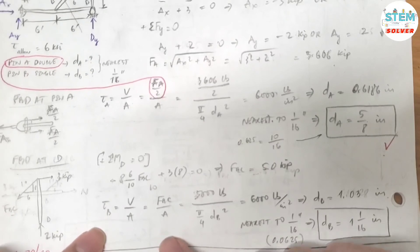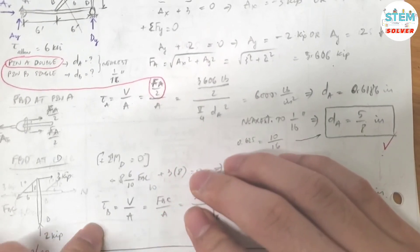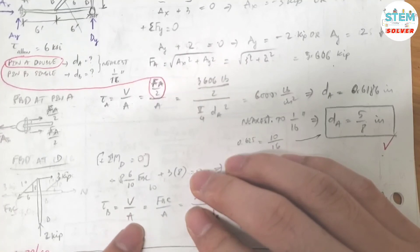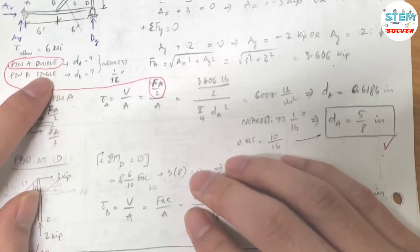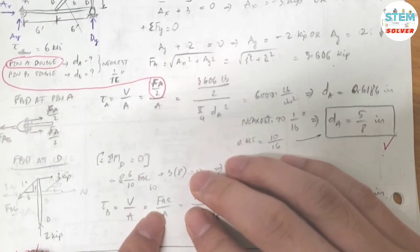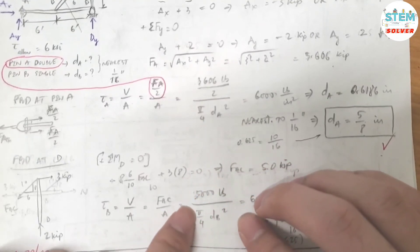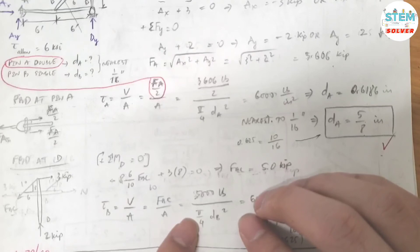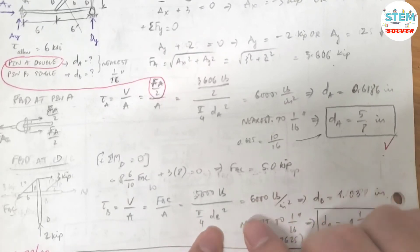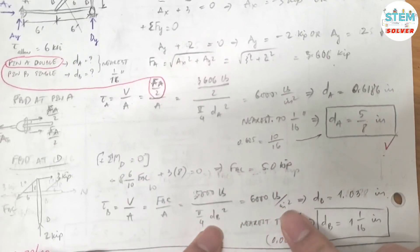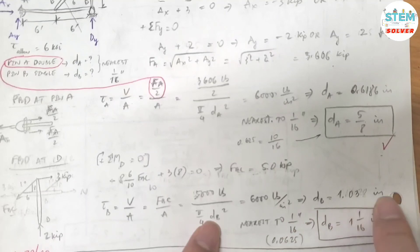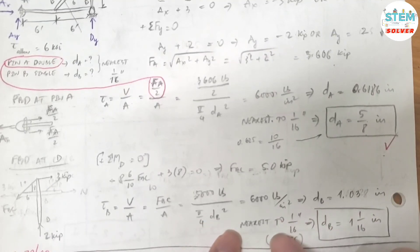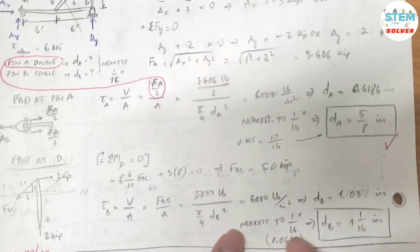Now again we use the shear stress equation, which gives me V over A, shear force divided by the area. And since we know that pin B is just a single shear force, it's just a single shear, we don't have to divide by 2 or any number. So that is equal to 5,000 pounds over π/4 times dB squared equals 6,000 pounds over inch squared, which is the allowable shear stress. For dB I got 1.03 inch.